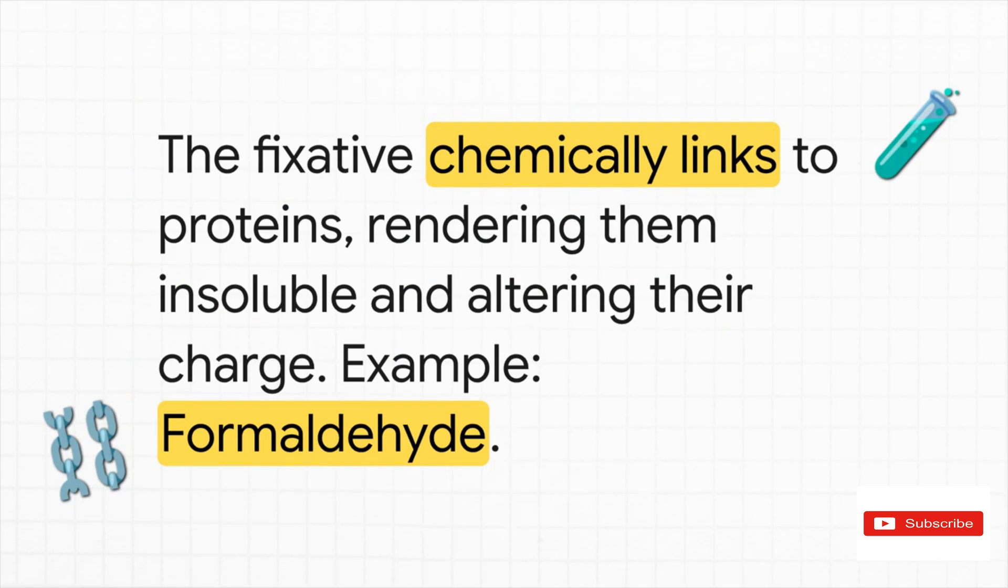There are two main ways we can do this chemically. The first is called additive fixation. In this case, the fixative molecule itself literally adds to the tissue, creating chemical bridges or cross-links between proteins. You can think of it like injecting a super-fast-acting glue into the cellular framework. This physically stabilizes everything. The classic examples here are formaldehyde and gluteraldehyde. One key thing to remember is that this process can change the electrical charge of the proteins, which has a big impact on how stains will stick to the tissue later.